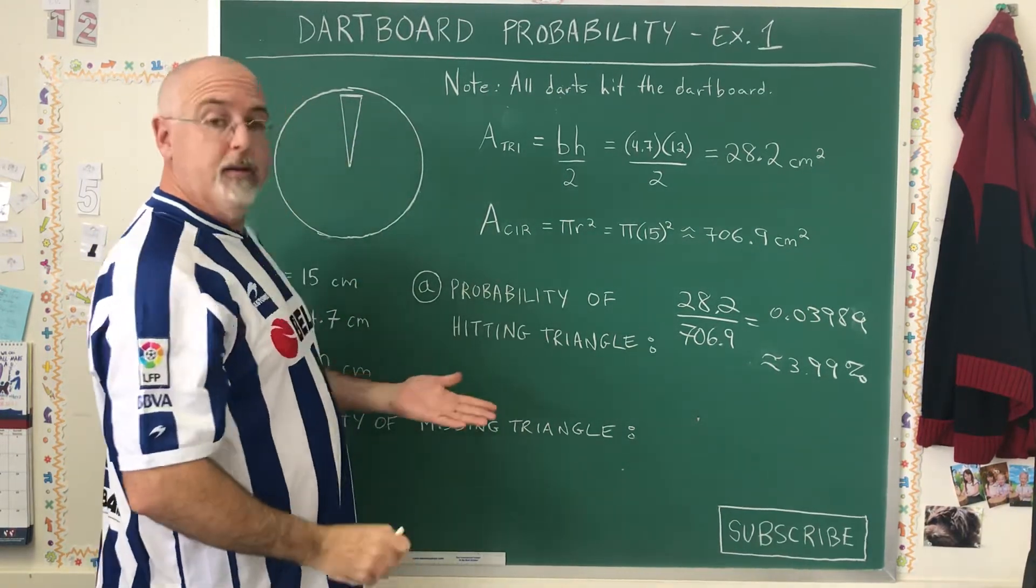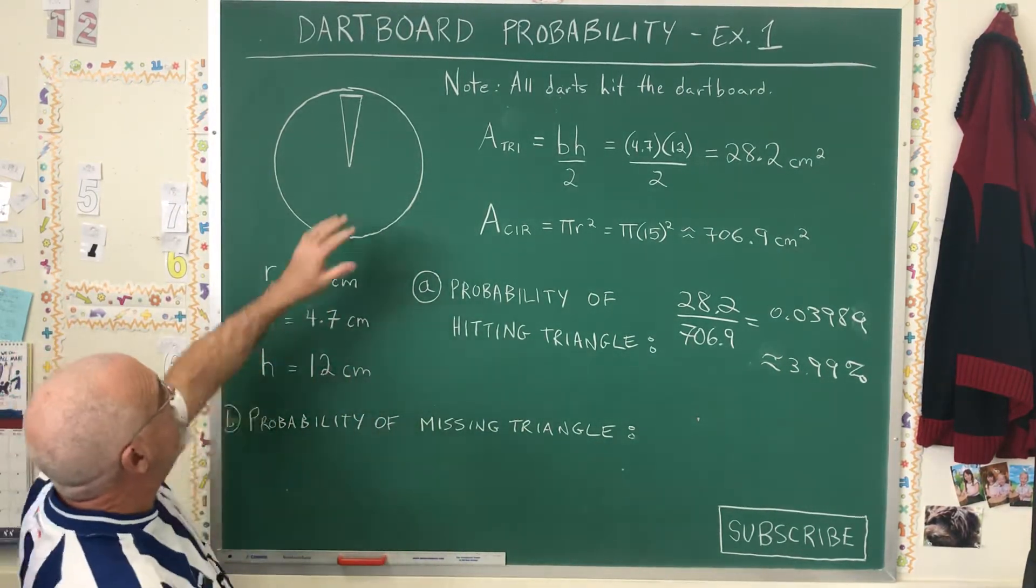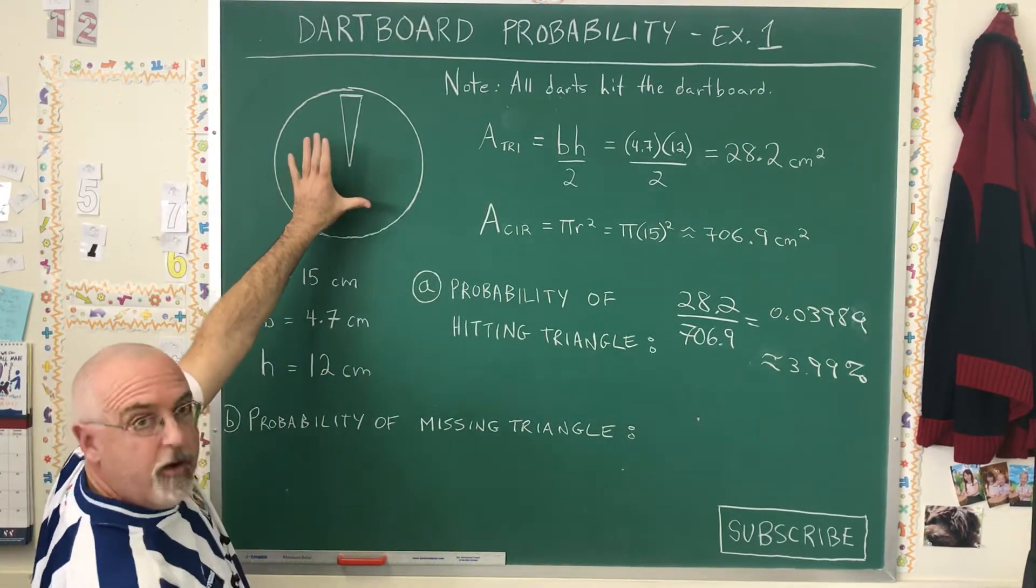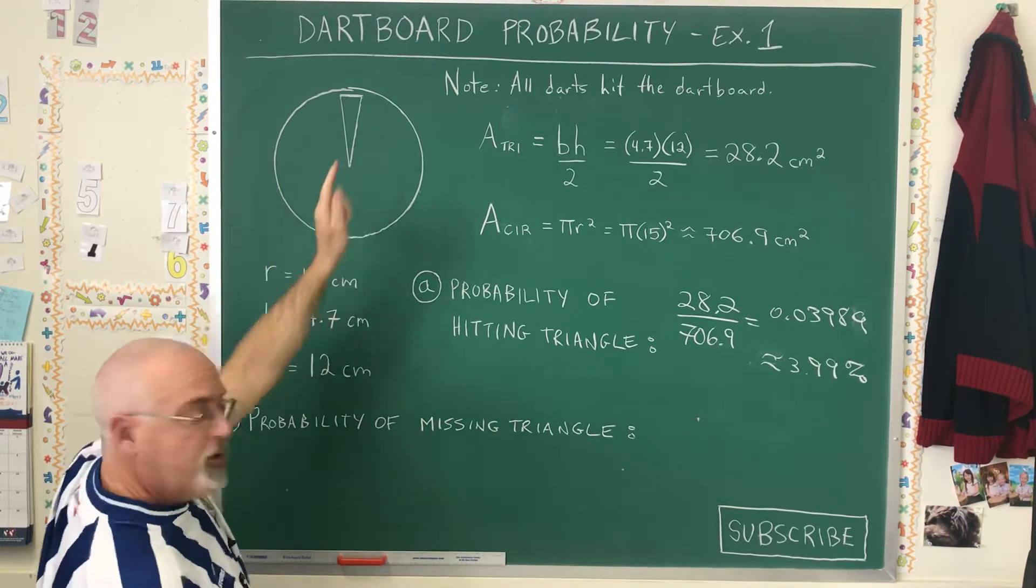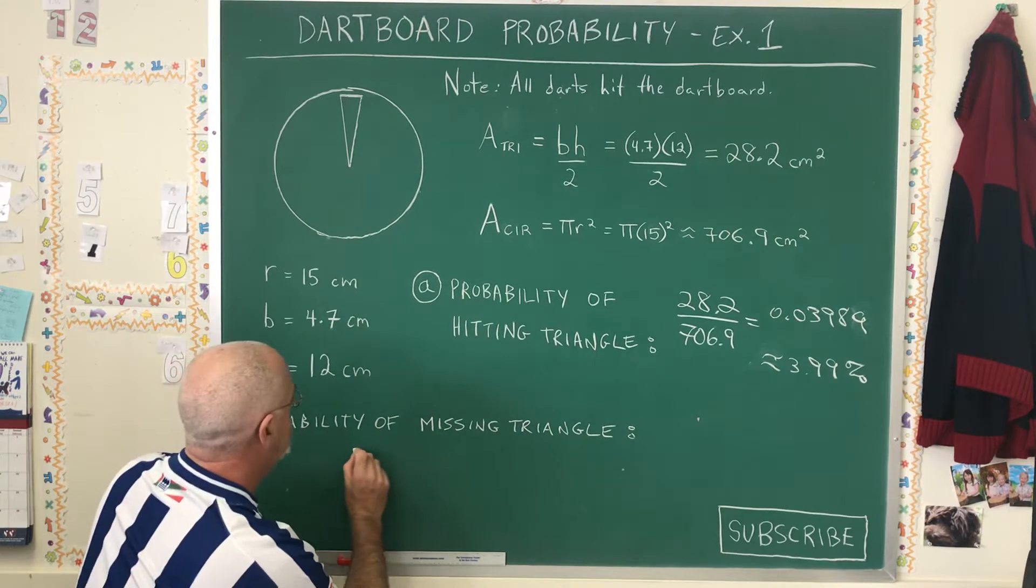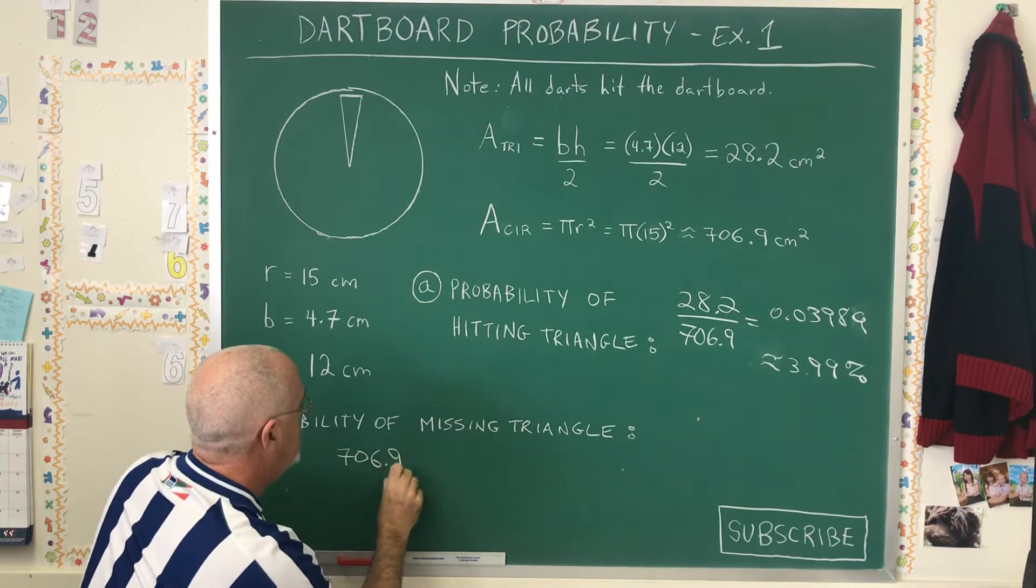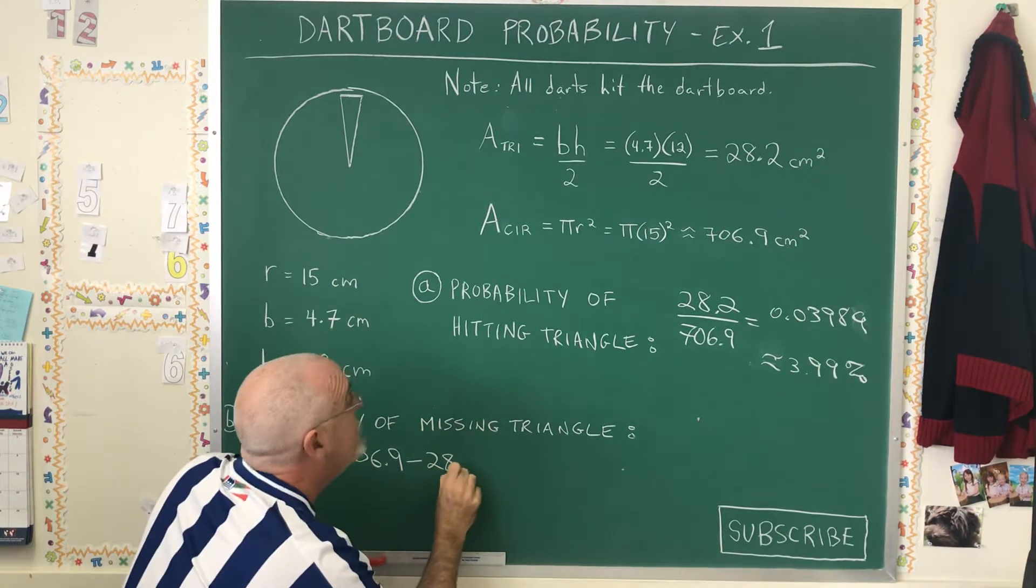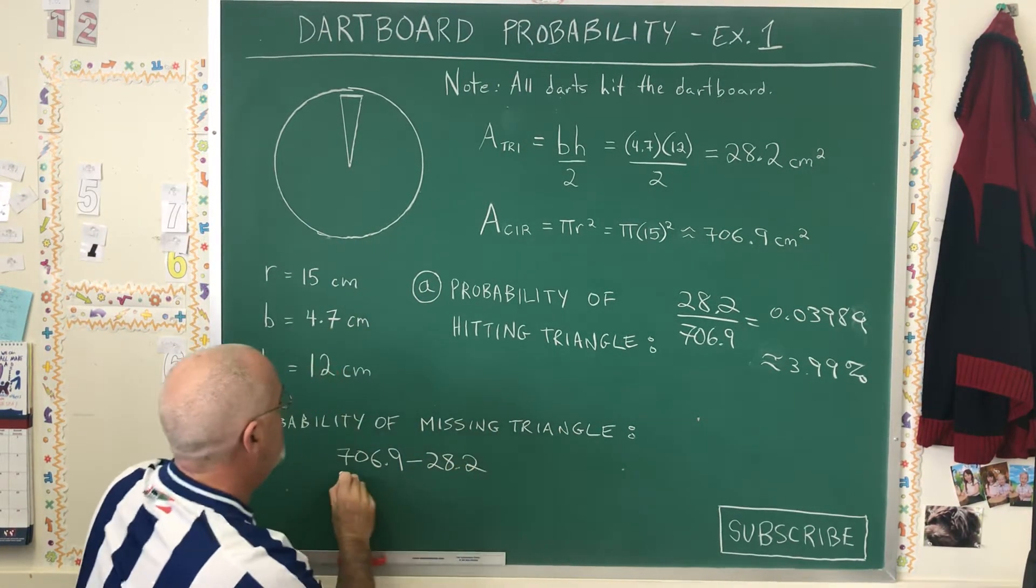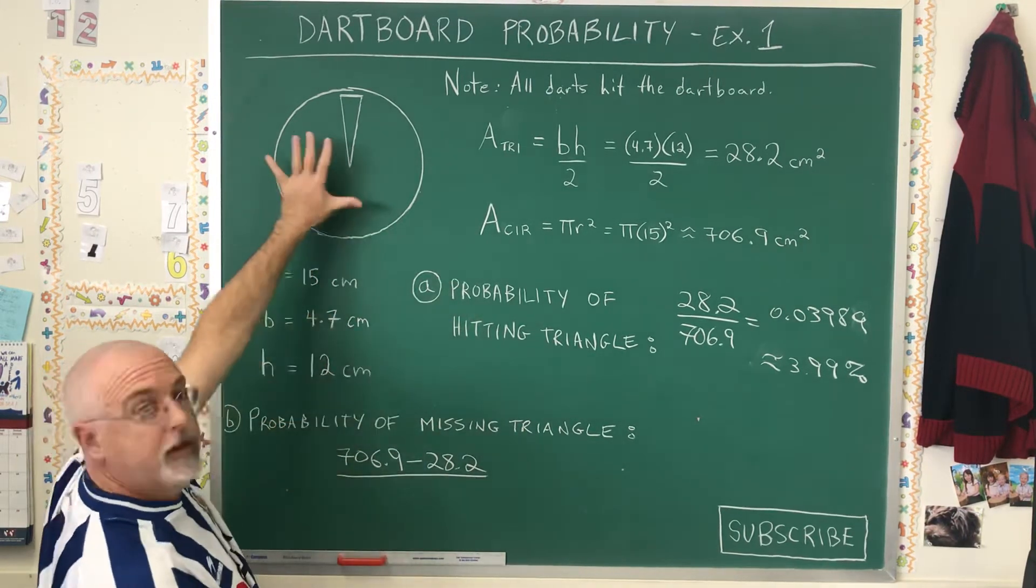And there's two ways of doing this. One way is to show the favorable area as the area of the circle but not the triangle. So we have to take the area of the circle and subtract the area of the triangle.